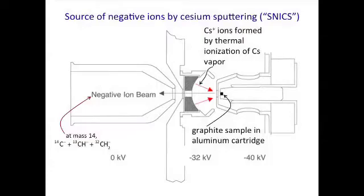Here's how you do the negative ion generation. You have a heated block and you vaporize cesium. Cesium has such a low work function that you can make Cs+ just by heating it — it ionizes thermally. Now you have a voltage gradient: here's minus 32 kilovolts, and your sample is at minus 40 kilovolts. This voltage gradient accelerates positive ions in that direction.